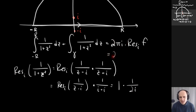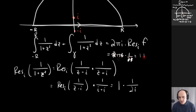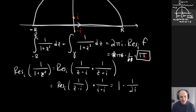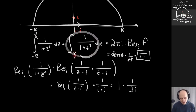Using that residue, the residue theorem gives 2πi × 1/(2i). Canceling the 2's and the i's, I'm left with π. So the sum of the two integrals — from −R to R plus the semicircular piece — equals π. That's not quite what we wanted on its own, since we want just the integral from minus infinity to infinity. We still need to understand what happens to the semicircular piece.